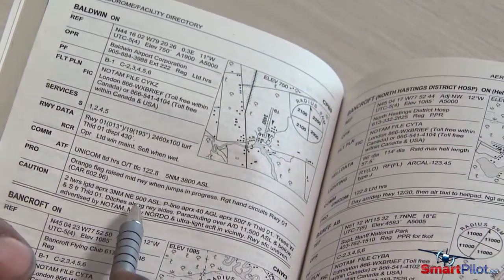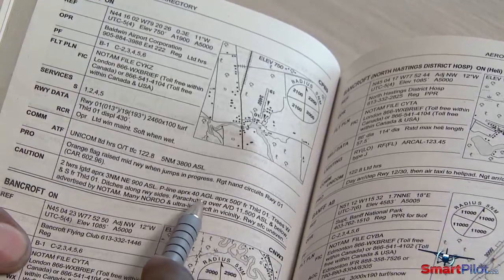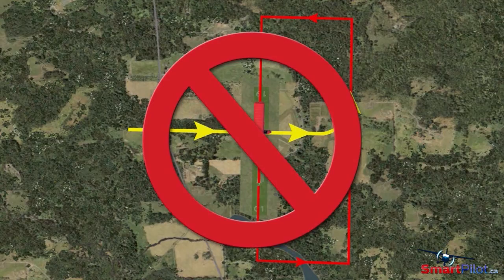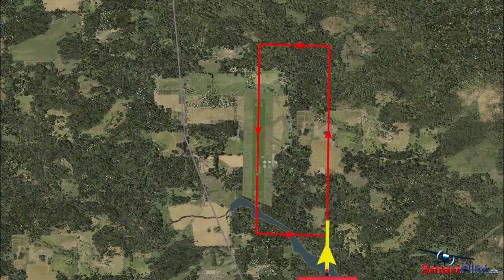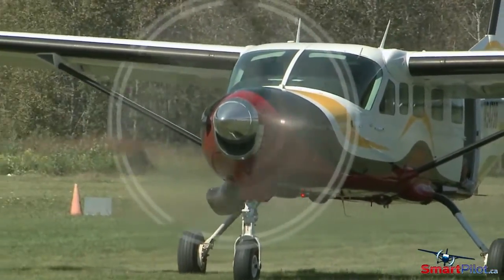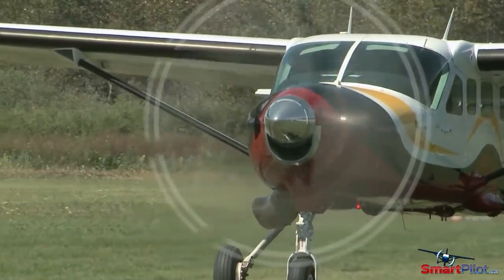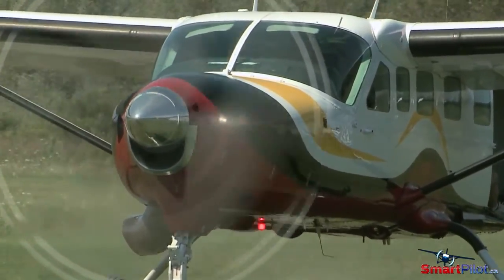A check of the CFS shows that Baldwin is registered for skydiving operations, and if they're underway, it would probably rule out an overhead approach, leaving straight-in on downwind as your only alternative. If you do decide to join overhead the field, make direct contact with the jump plane to coordinate your circuit entry and ensure that you don't create a hazard to descending skydivers.